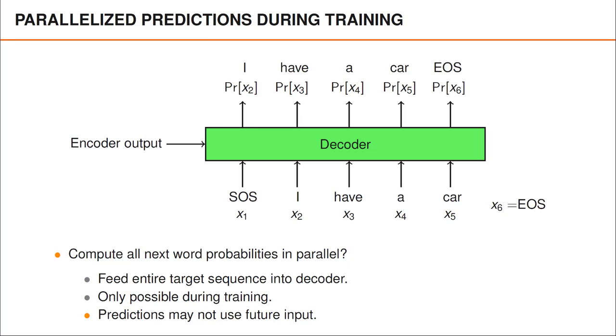If we also tell the network that x2 is 'I', the task would be trivial and the network would not learn to predict unseen words, which is the ability needed in order to later produce translations. Similarly, when computing the probabilities for x4, the network should only have access to the output from the encoder as well as x1, x2, and x3.